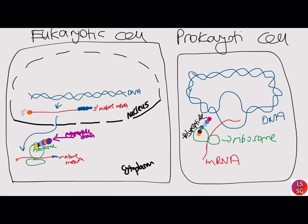In prokaryotes, the protein factory called ribosome attaches to the messenger RNA while it is still being transcribed. In prokaryotes there is no nucleus, so both transcription and translation occur in the cytoplasm. Translation begins at the 5' end of messenger RNA while the 3' end is still attached to DNA. In eukaryotes, once transcription is over, mature messenger RNA leaves the nucleus through nuclear pores and goes to the cytoplasm to the ribosome for translation.